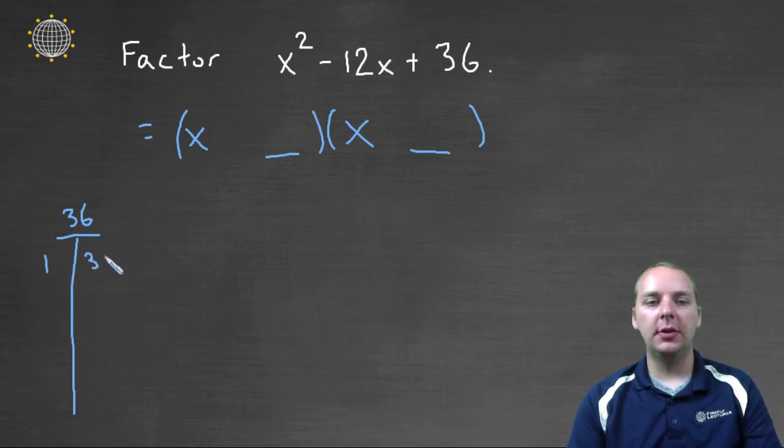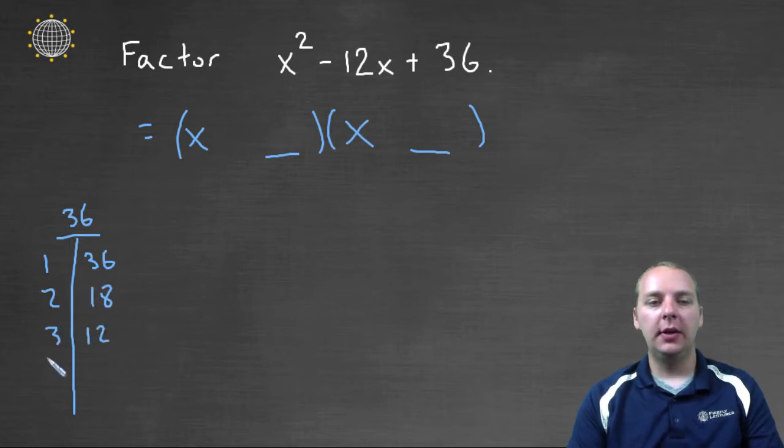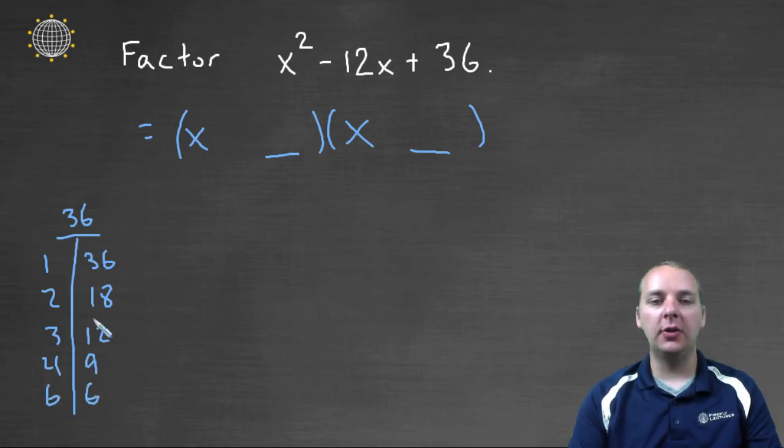Could be 1 times 36, it could be 2 times 18, it could be 3 times 12, it could be 4 times 9, or it could be 6 times 6. Any of those would multiply to 36.